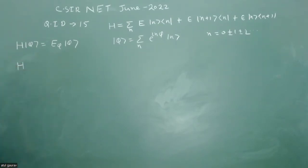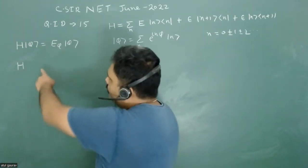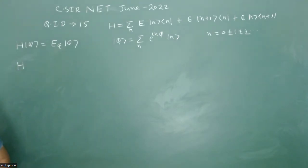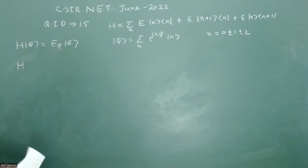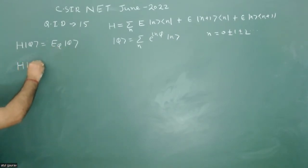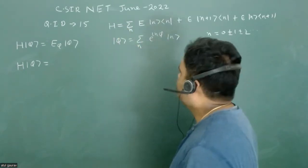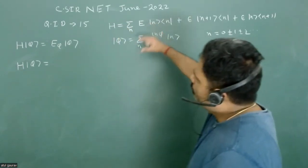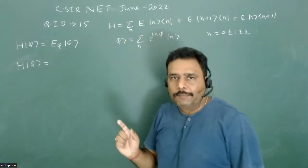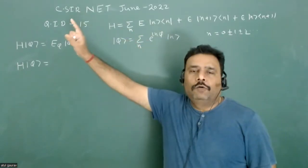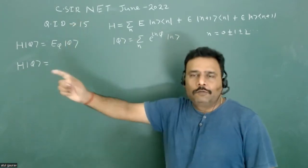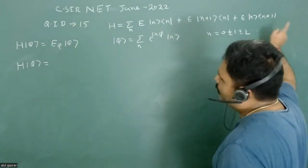To solve this, I will substitute the expression for |φ⟩ into H|φ⟩. When we calculate H|φ⟩, there is one summation over n from the Hamiltonian and another summation over n from |φ⟩. Combining these gives a double summation, since both indices vary independently over all integers.